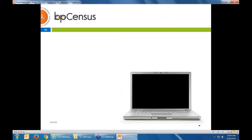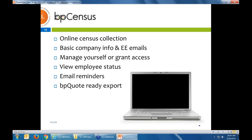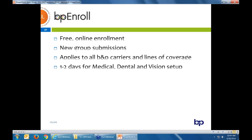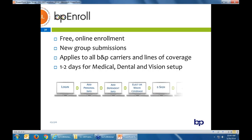With BP Census — our census collection tool for mid-market groups or prospects — it's quick and simple. You register for it, each employee gets a quick email, and it doesn't require a lot of data. We just need dates of birth for all family members based on community rates, as well as the home zip code to ensure plan availability is correct. With BP Enroll — our free online enrollment tool — we really want to encourage that. It's free down to a one-life group. It just helps that initial enrollment when you're moving carriers to make sure things are complete, done quickly, accurately, and legible.